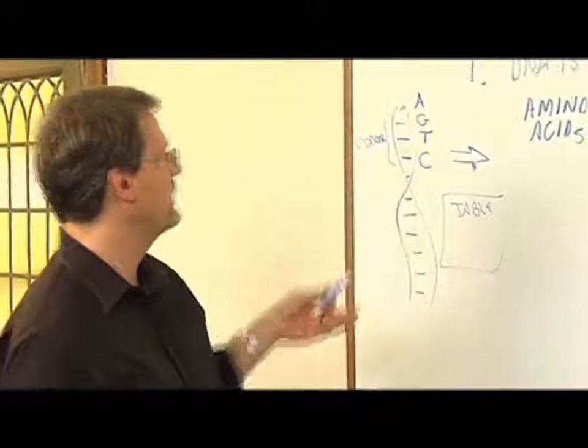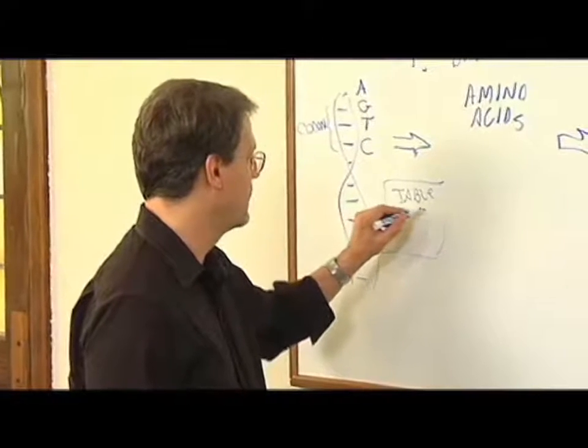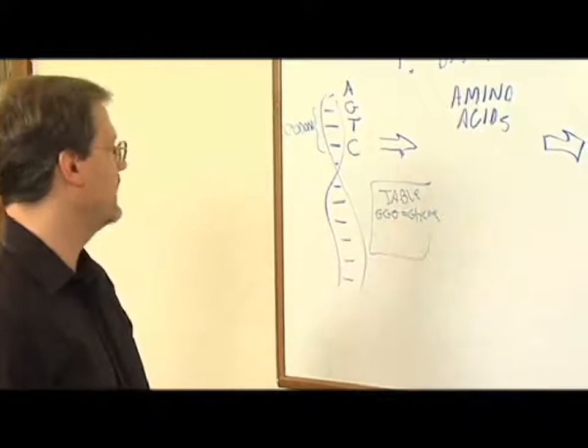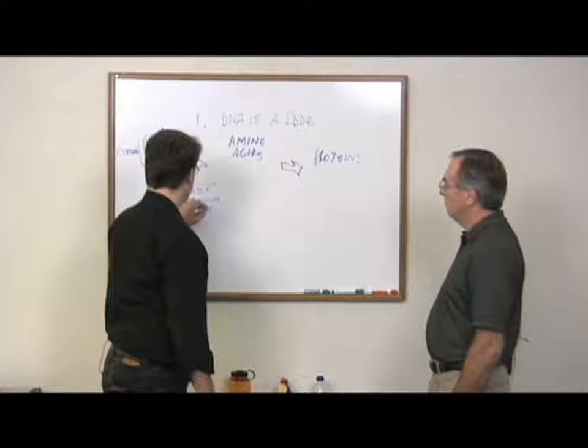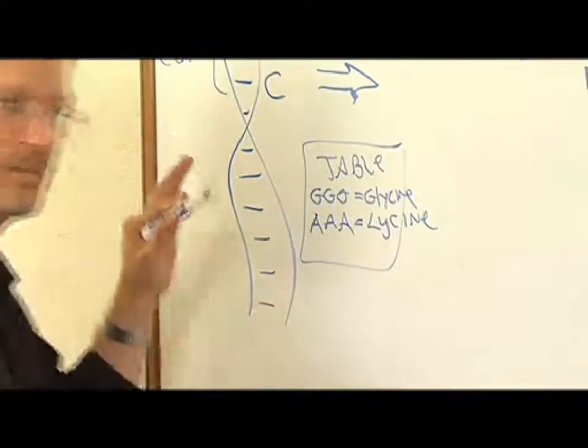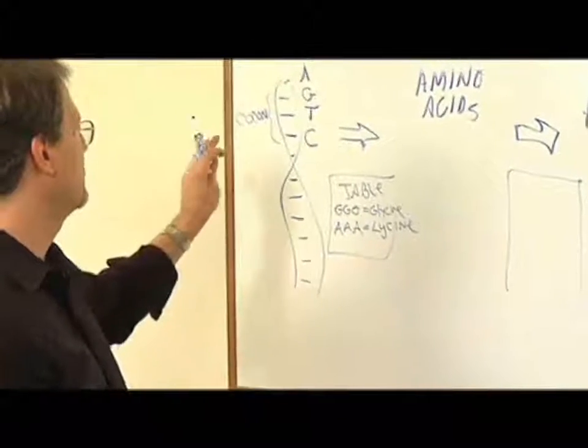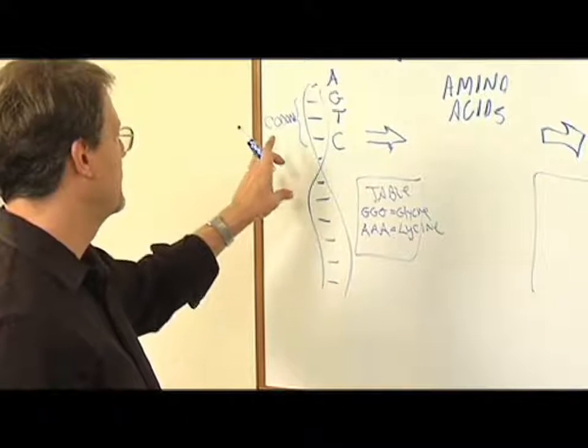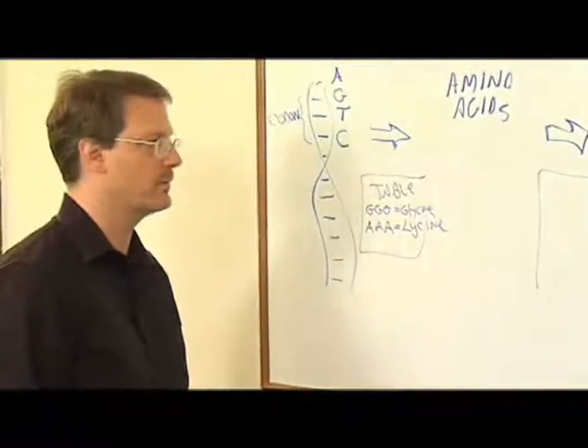And so for example, GGG codes for glycine, an amino acid called glycine. AAA, for example, codes for lysine. And you can look at any biology book or any genetics book and it will explain this table. And then there's a much more complex table, which I won't go into, that creates specific proteins based on combinations of amino acids. And so this is like going from ones and zeros to letters of an alphabet to words and sentences, essentially, is what's going on there.